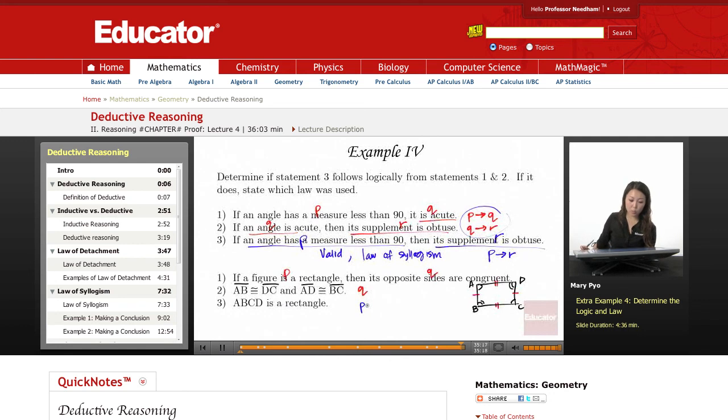So statements 1 and 2 is P to Q, and statement 2 is Q. Then my third statement is P. Can you use these two to conclude, make this conclusion that P is true? No, right? So this is invalid. The statement right here is invalid.